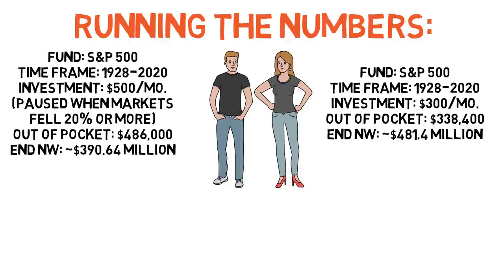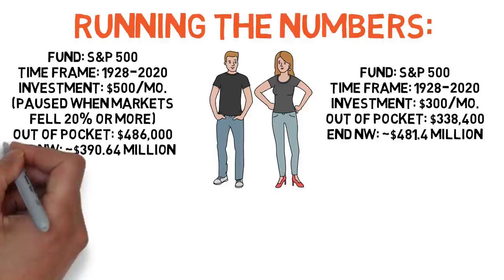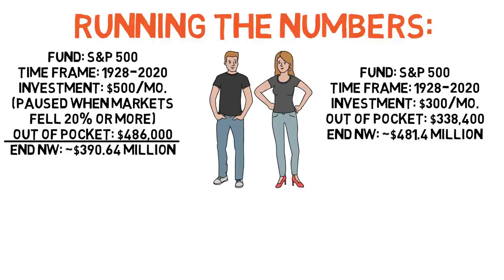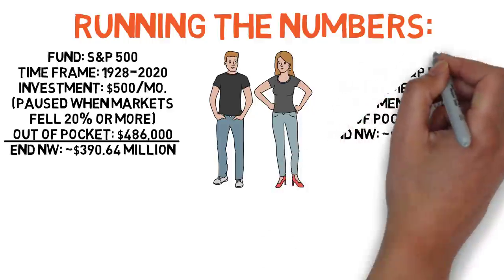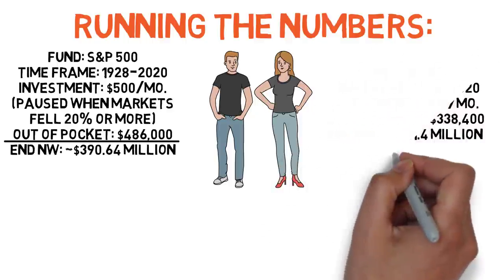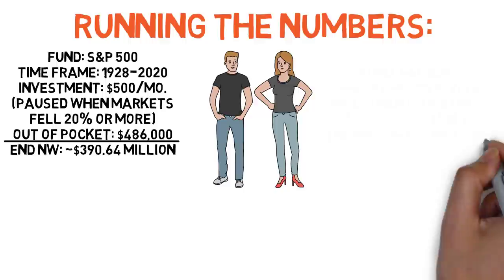So both John and Jane invested during the same time period. So this isn't one of those compound interest examples where one person started young and so the other person was never able to catch up financially. They're on even footing, at least in terms of timing. John actually invested more overall, $486,000 versus Jane's $338,400. So in theory, he should have the leg up, but he comes up short by over $90 million. Why is that?